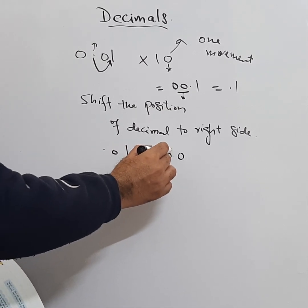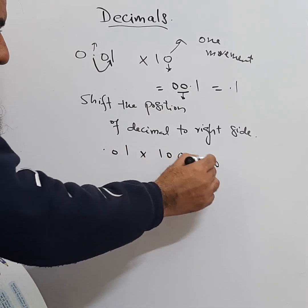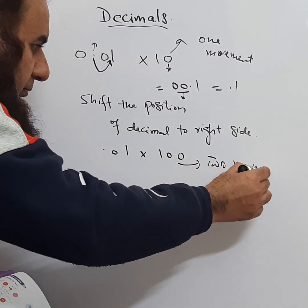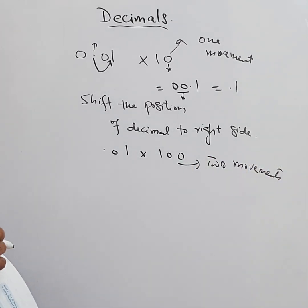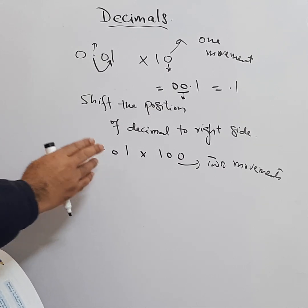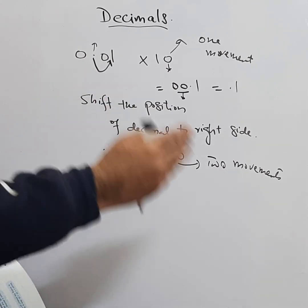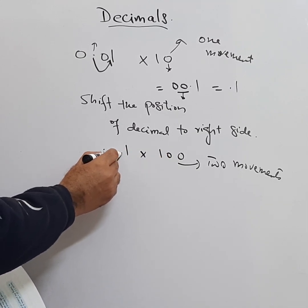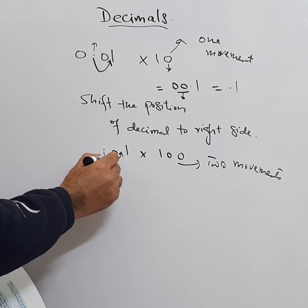The decimal will be moved twice on the right side, like this. From here it will jump to this place, this is one movement. From here it will go to this side, becomes two movements.